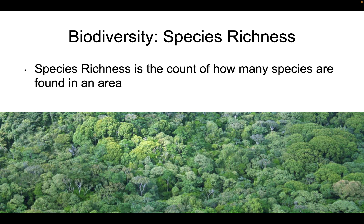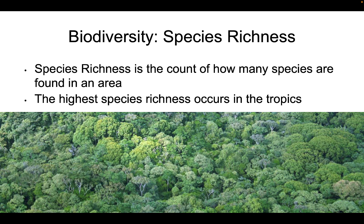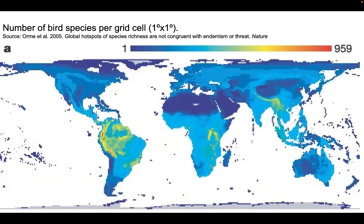The majority of species richness is found in the tropics. Looking at species richness on a global scale using 1-degree latitude by 1-degree longitude cells — about 70 by 70 miles, or 110 by 110 kilometers — we see that areas along the Andes Mountains and in the rainforests of the Amazon have the highest species richness on the planet. For birds, some of these areas contain up to 959 species within a single 70-by-70-mile cell.